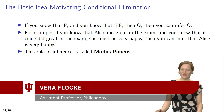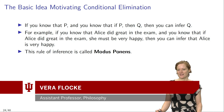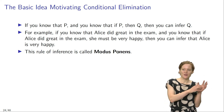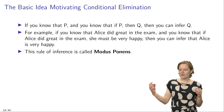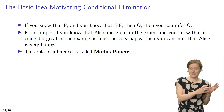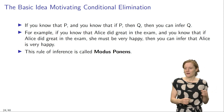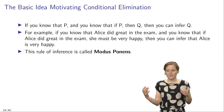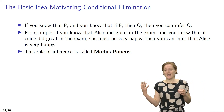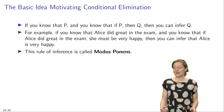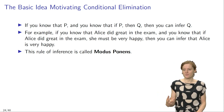The basic idea motivating conditional elimination is this: if you know that P, and you also know that if P then Q, then you can infer Q. For example, if you know that Alice did great in the exam, and you also know that if Alice did great in the exam she must be very happy, then you can infer that Alice must be very happy. This is a very famous, often discussed rule of inference, and it has a special name. It is called modus ponens.